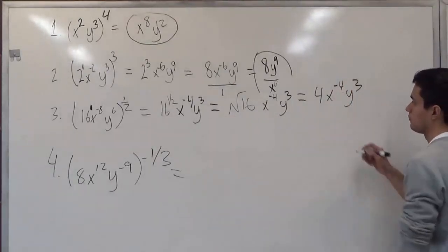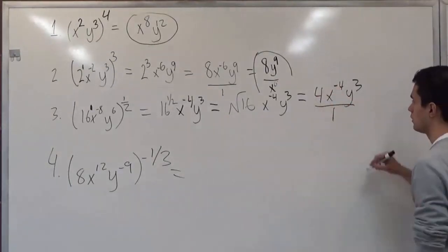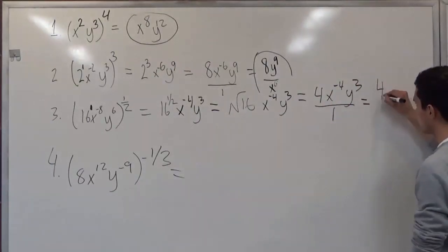So now we see that negative, and we know that this is a whole. So in order to make this positive, we switch it, which then gives us 4, y to the third, x to the fourth.